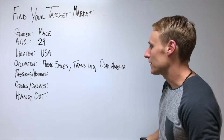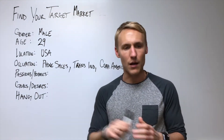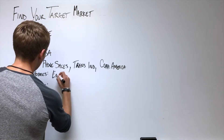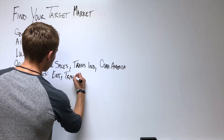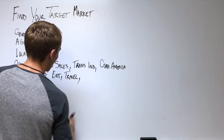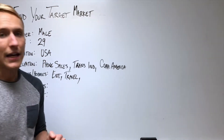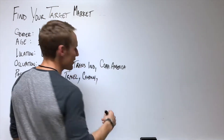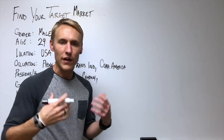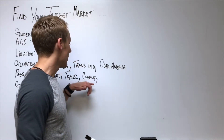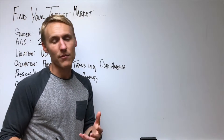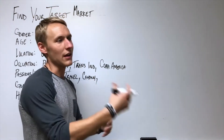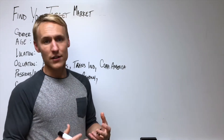Once you've got your occupation down, go ahead and start listing your passions and hobbies. For myself: entrepreneurship, I love to travel — hence digital nomad — I love to hike, I love to camp, I love to be on the go. Keep these things in mind because later on when you're providing content, you can share your passions and hobbies so people who like the same things have a relatable connection to you.